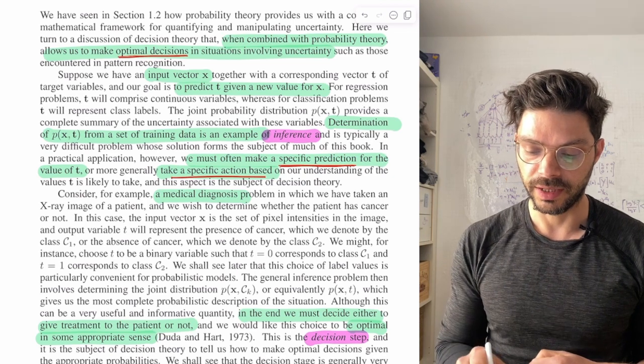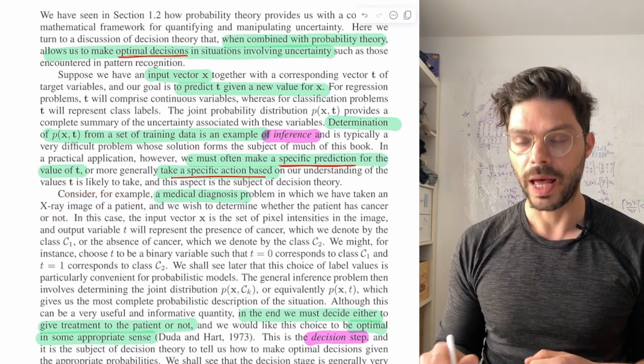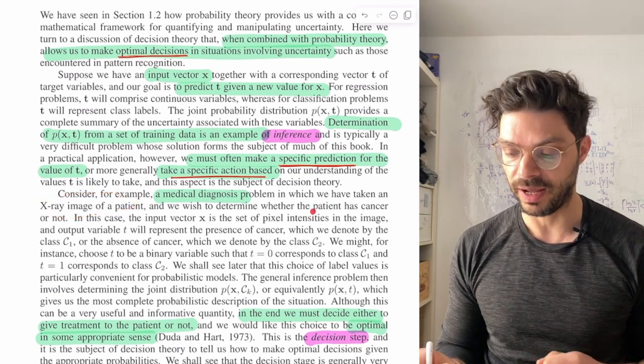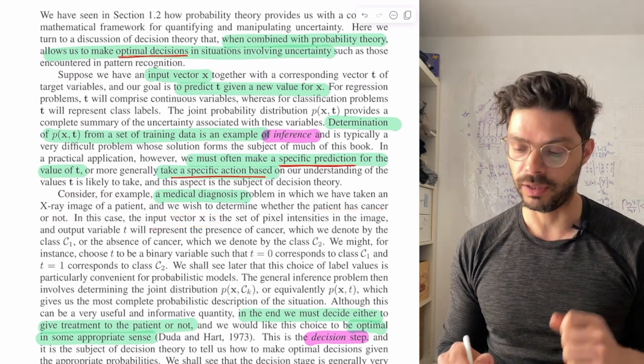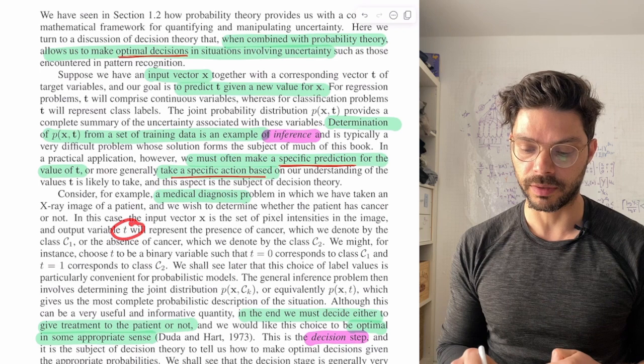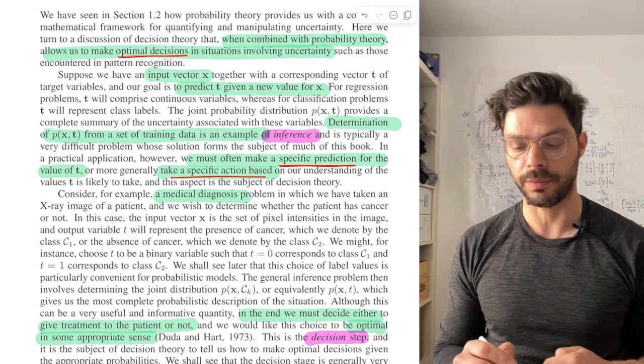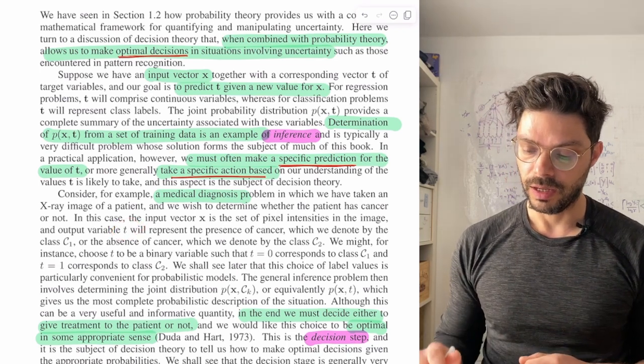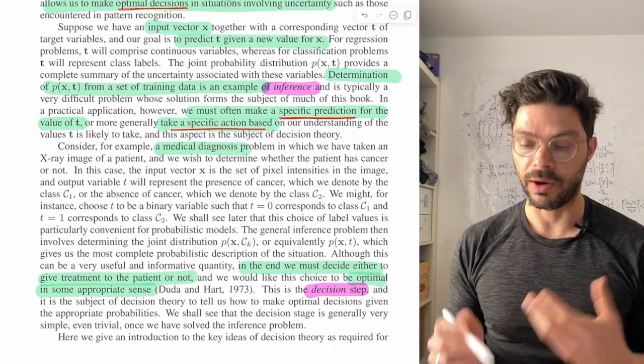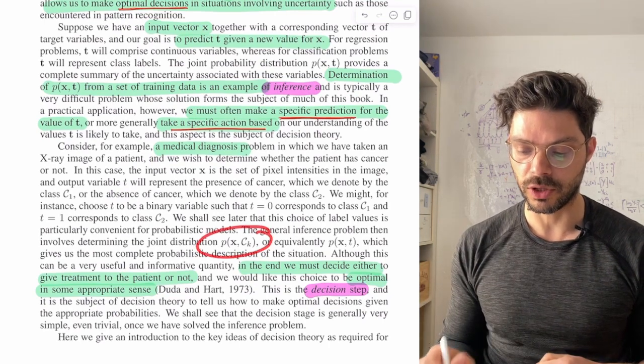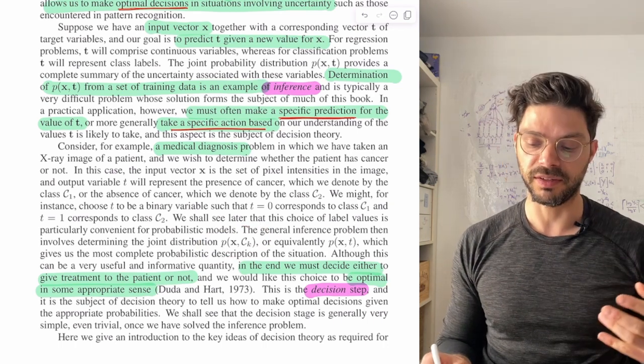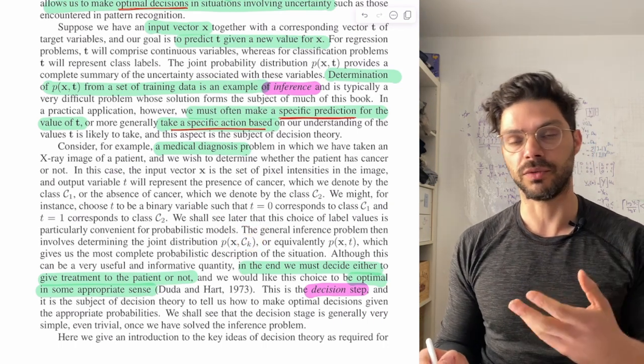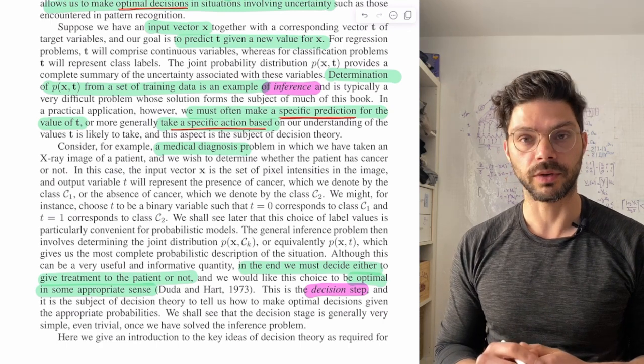So in this particular case, let's say we've taken an X-ray image of a patient, and we want to determine whether the patient has cancer. So our inputs are the pixel intensities, and the output might indicate whether the person has cancer or not. And we're going to have now, at the end of this process, this joint probability of the two classes. So the probability of the pixel intensities and the two classes for whether the person has cancer or not.